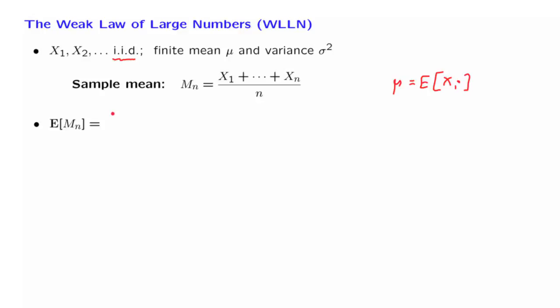In any case, the expected value of the sample mean by linearity, it is the expected value of the numerator divided by the denominator. Using linearity once more, the expected value of a sum is the sum of the expected values. And since each one of those expected values is equal to mu, we obtain n times mu divided by n.